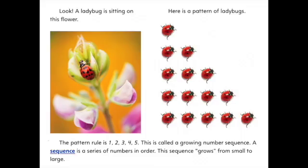Look, a ladybug is sitting on this flower. Here is a pattern of ladybugs. The pattern rule is 1, 2, 3, 4, 5. This is called a growing number sequence. A sequence is a series of numbers in order. The sequence grows from small to large.